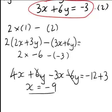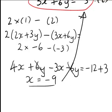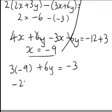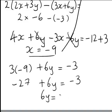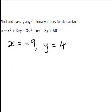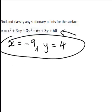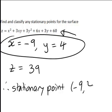So x equals negative 9 is the x-coordinate of our stationary point. Substituting into equation two gives us 3 times negative 9 plus 6y equals negative 3. That becomes negative 27 plus 6y equals negative 3, so adding 27 to both sides, 6y equals 24, and therefore y equals 4. To find the z-coordinate, we substitute both values back into the original equation for z, which gives z equals 39. So the stationary point has coordinates negative 9, 4, 39.